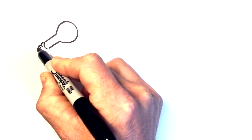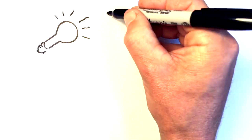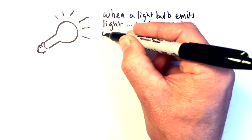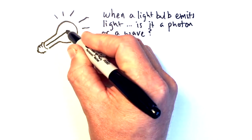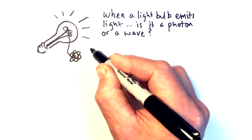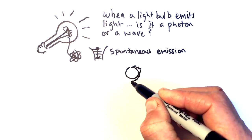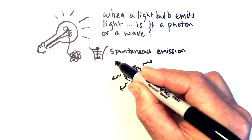Take a light bulb for example. We might ask, when this emits light, does it emit a photon or a wave? Now imagine this is a fluorescent light bulb where light is emitted when an electron bound in an atomic orbital transitions to a lower energy state. This process is called spontaneous emission.